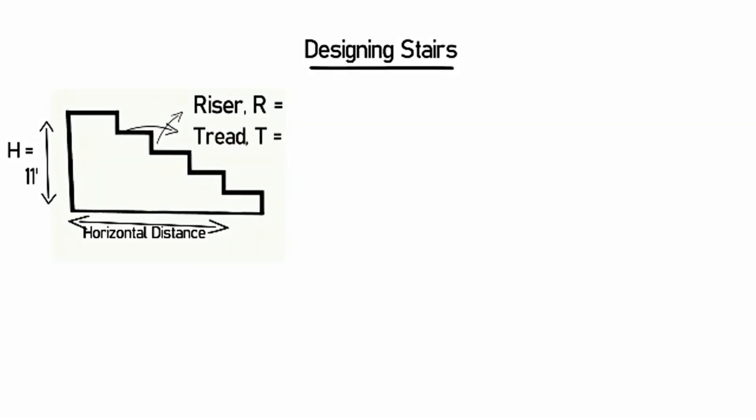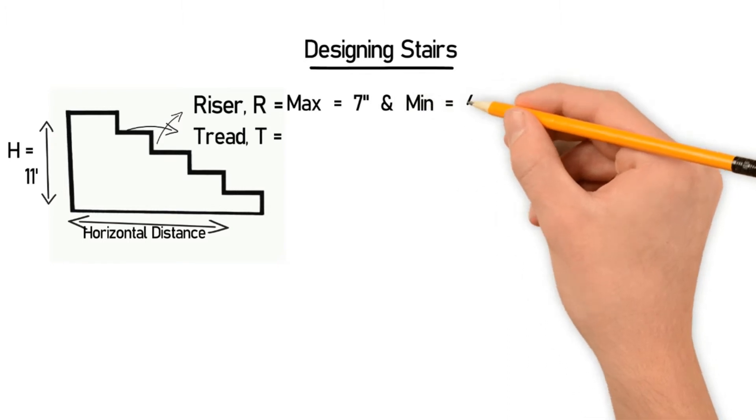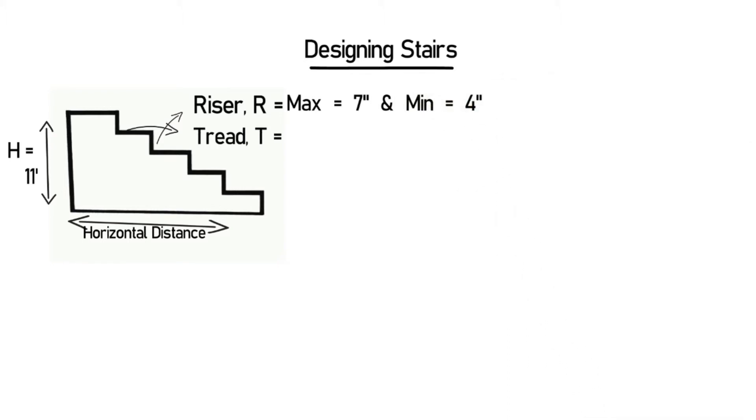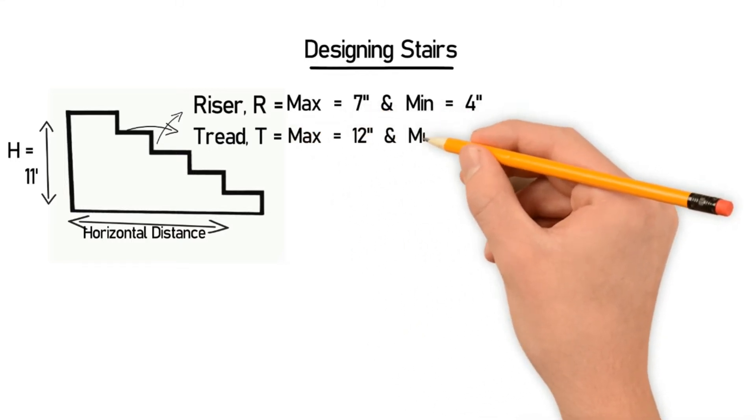So the maximum riser is 7 inches and minimum riser is 4 inches. Same for the tread, maximum tread is equal to 12 inches and minimum tread is equal to 10 inches.